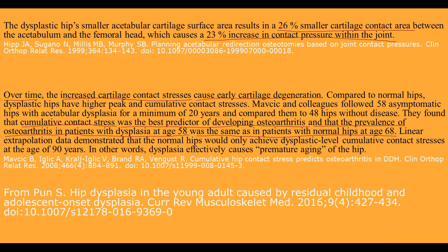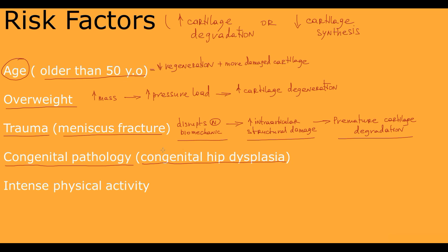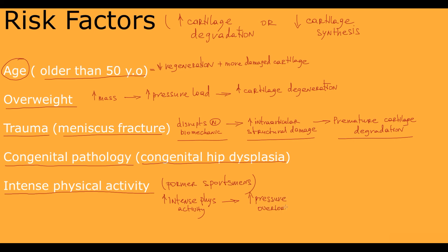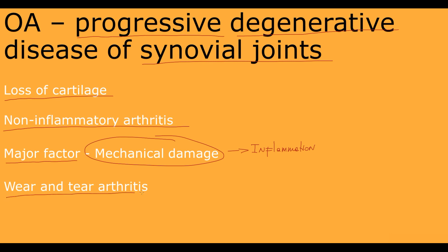Another risk factor is very intense physical activity, essentially former professional athletes. The more intense and regular the physical activity, the more pressure overload cartilage undergoes and the faster cartilage degeneration becomes. This is why osteoarthritis is called 'wear-and-tear arthritis.'